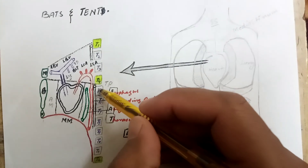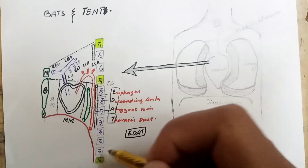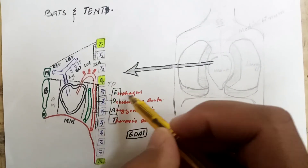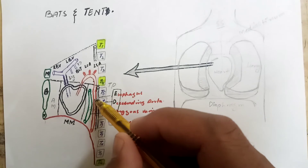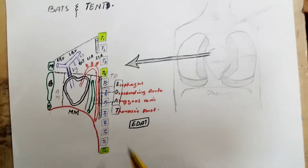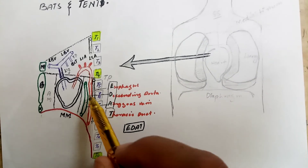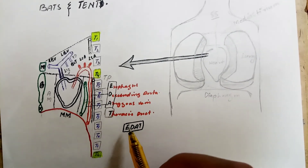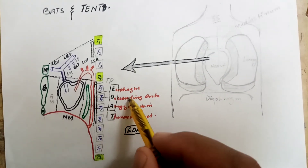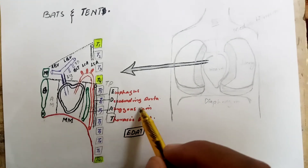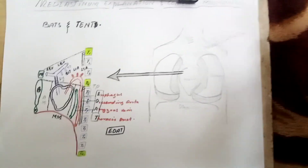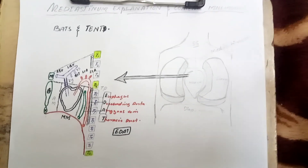The posterior mediastinum is the space just posterior to the heart and anterior to T5 up to T12 vertebrae. The contents of the posterior mediastinum are the esophagus, the descending aorta, and the thoracic duct. To memorize these, we have the mnemonic 'EDAT': E for the esophagus, D for the descending aorta, A for the azygos vein, and T for the thoracic duct. This is all about the mediastinum — thanks for watching.